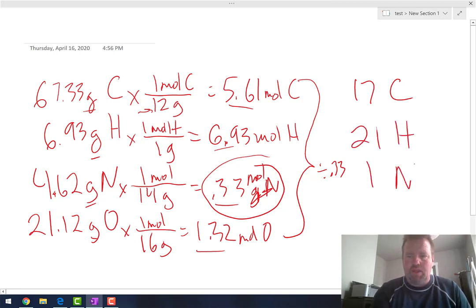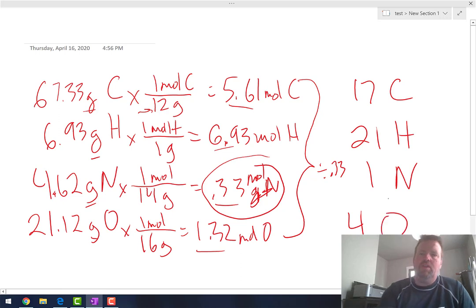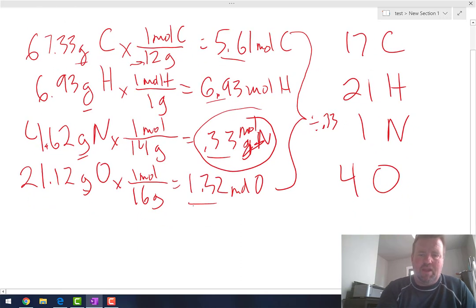Obviously, that's one nitrogen. And then oxygen, 1.32 divided by 0.33 is four oxygens. So that means that this formula or this chemical has a formula of C17H21NO4.